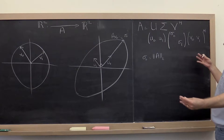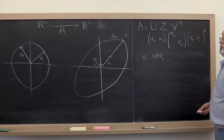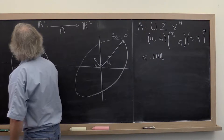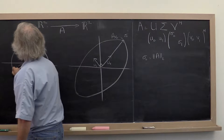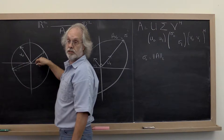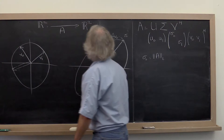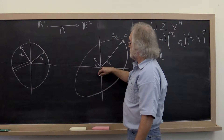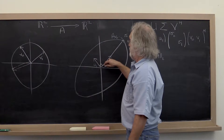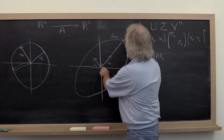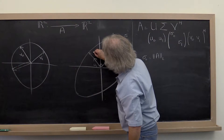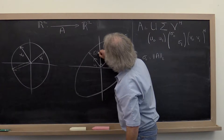This is the geometric interpretation. If you take any vector on the unit circle, that vector can be written as a linear combination of these two vectors. The vector it maps to is the same linear combination of the transformed vectors. This vector right here is the vector Sigma1 times U1.